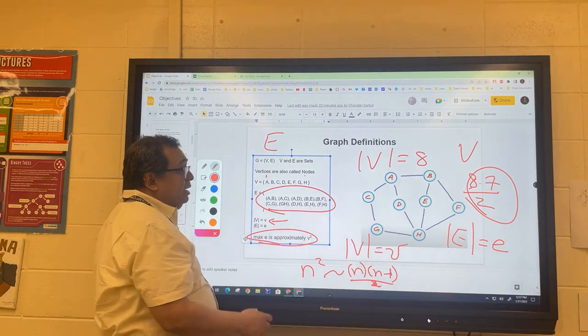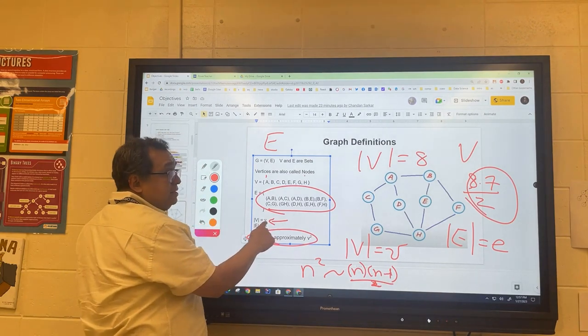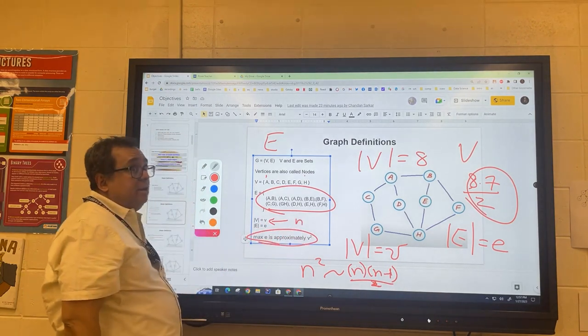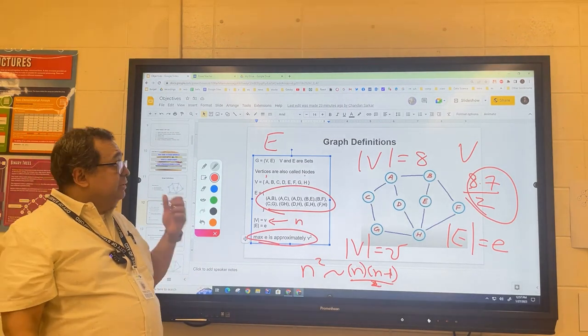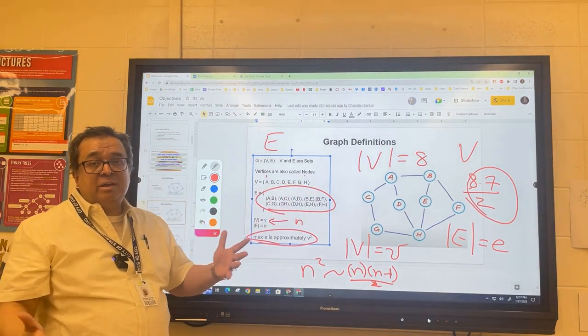I meant to mention, by the way, half the videos on YouTube use v as the number of vertices and the other half use n. This has to do with the fact that the vertices are sometimes called nodes, so v and n are the same thing.